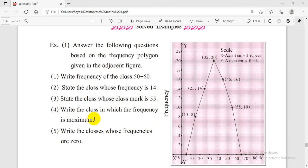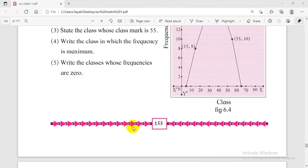Write the class in which the frequency is maximum. The y coordinates are the frequencies. The highest point of the frequency polygon has x coordinate showing the class mark and y coordinate showing the frequency. The class with maximum frequency has class mark 35. So 35 is the midpoint of 30 and 40, which is the class with maximum frequency.